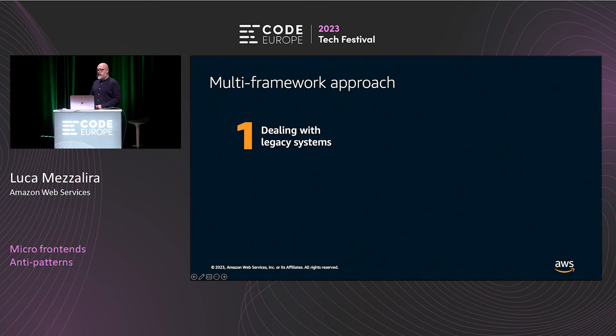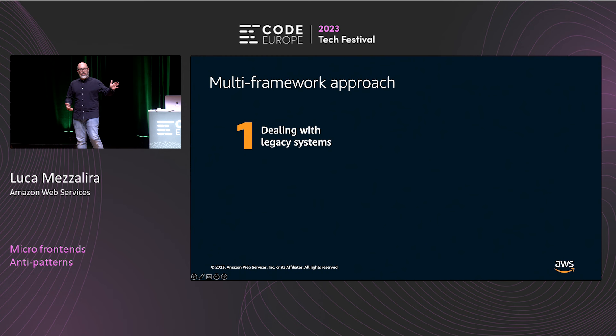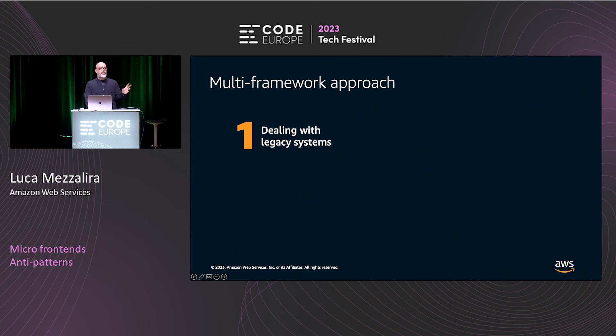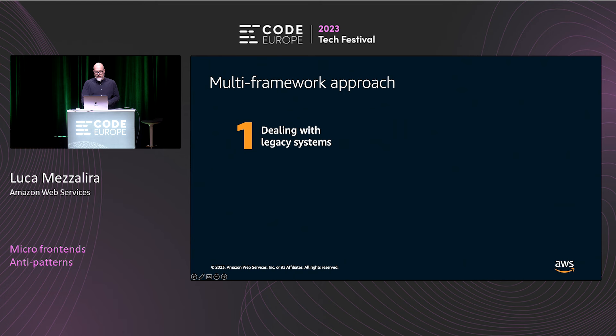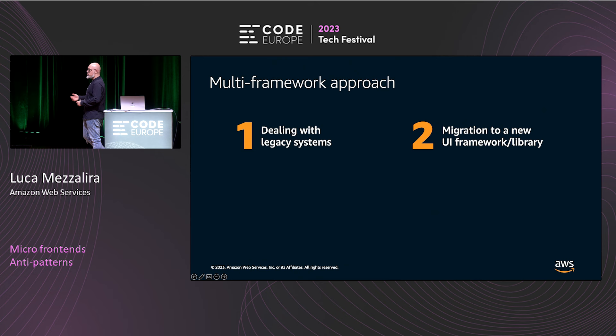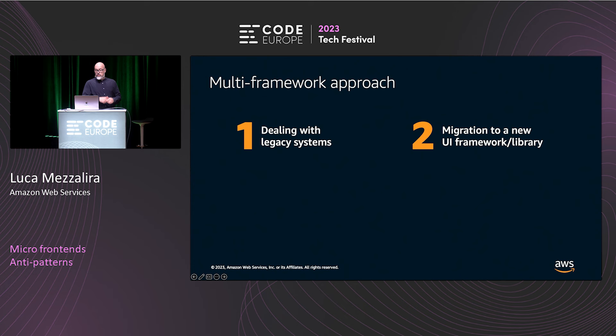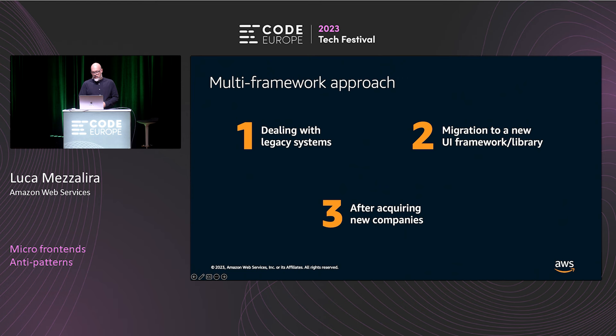If you're migrating from a monolithic architecture to micro-frontends and want to move away from an old framework version to another UI framework, you can do that — but knowing up front that it's going to be temporary. You're not optimizing your design for this approach. The second case is migration to a new UI framework: imagine you're using an old version of Angular and want to move to the new version — you could approach that with micro-frontends, slowly replacing portions of the page one after another.